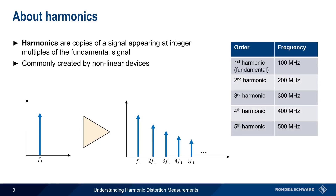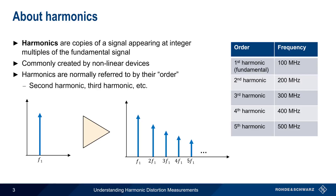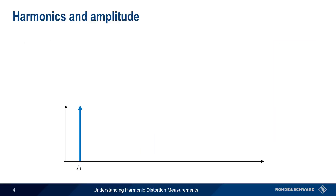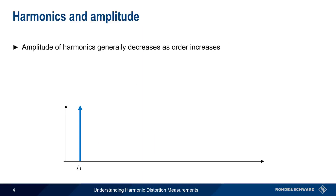Although the fundamental is not often called the first harmonic, harmonics are normally referenced by their order — that is, second harmonic, third harmonic, etc. As you may have noticed from the previous slide, the amplitude, or level of a harmonic decreases as the harmonic order increases.